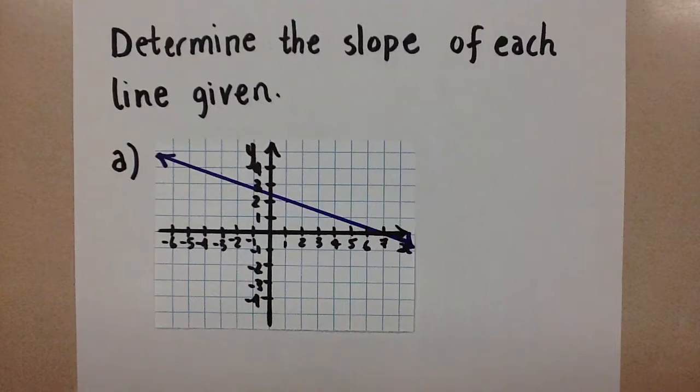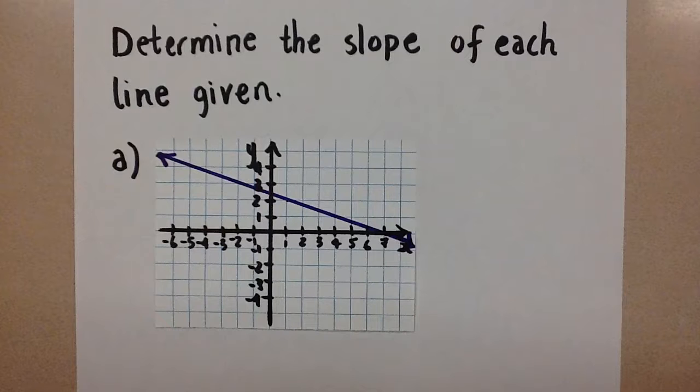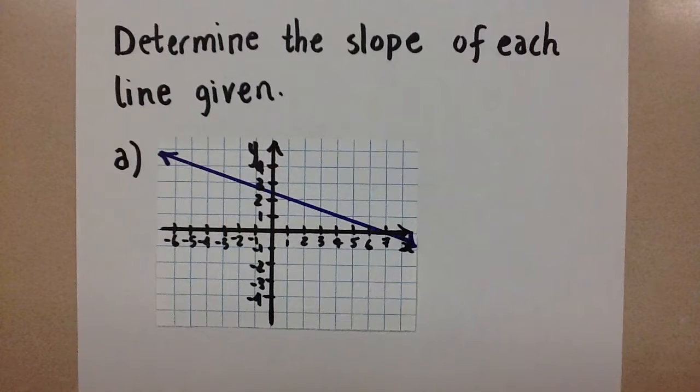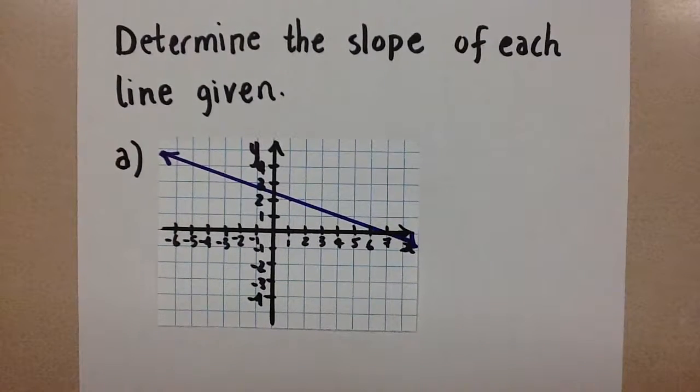Hi guys, Mrs. A here. Today we're looking at finding the slope of lines. We know that the slope of a line means the incline or the steepness of that line, but we're not going to measure that in degrees. We're going to use slope, which compares the rise of the line to the run of the line.